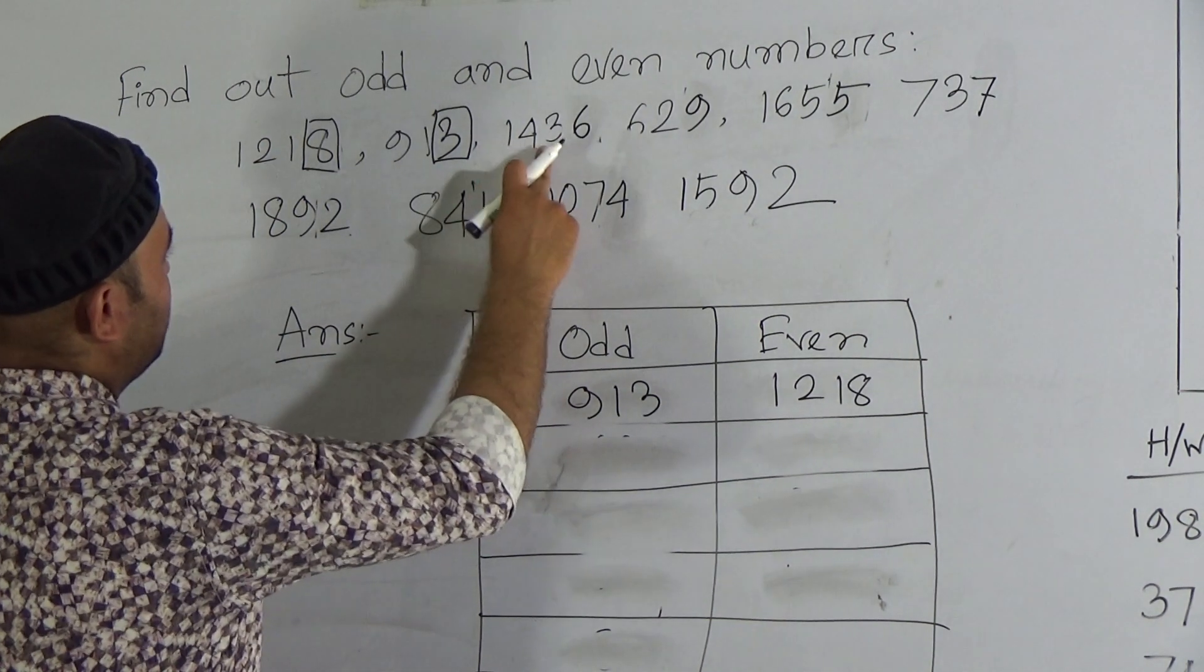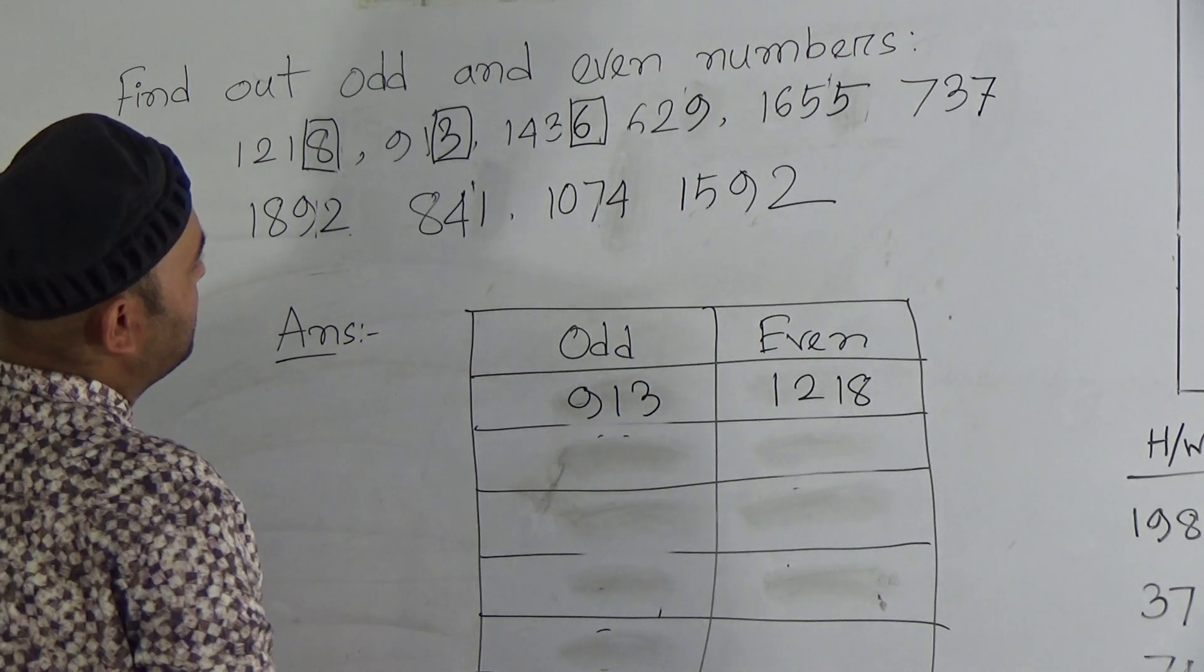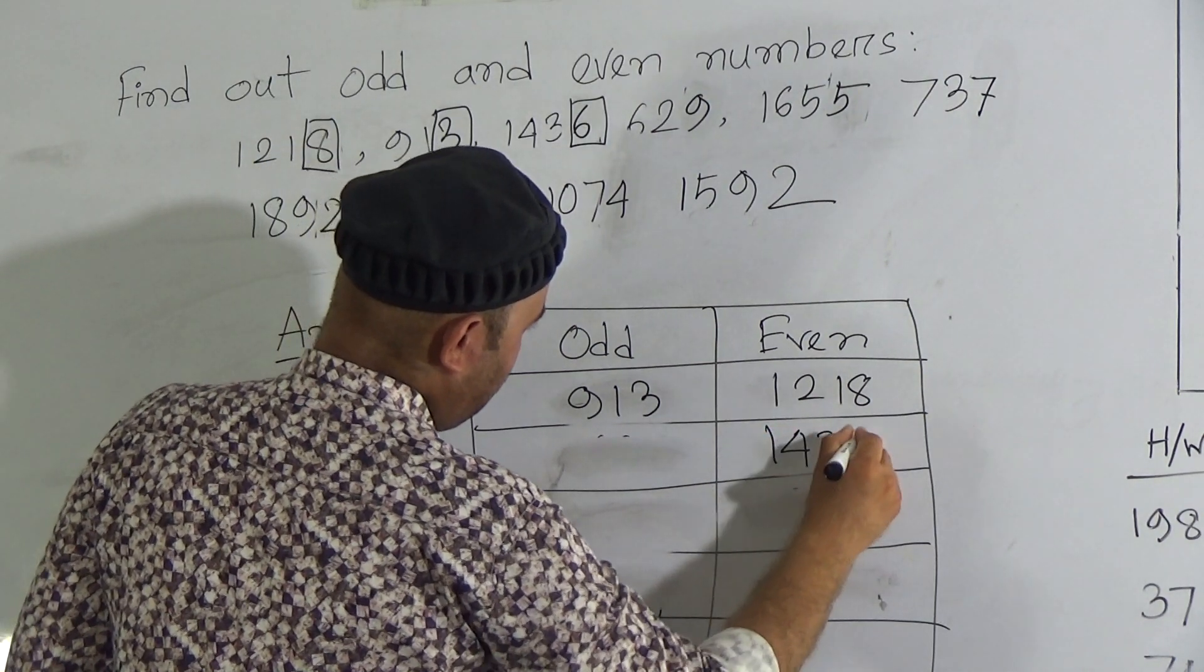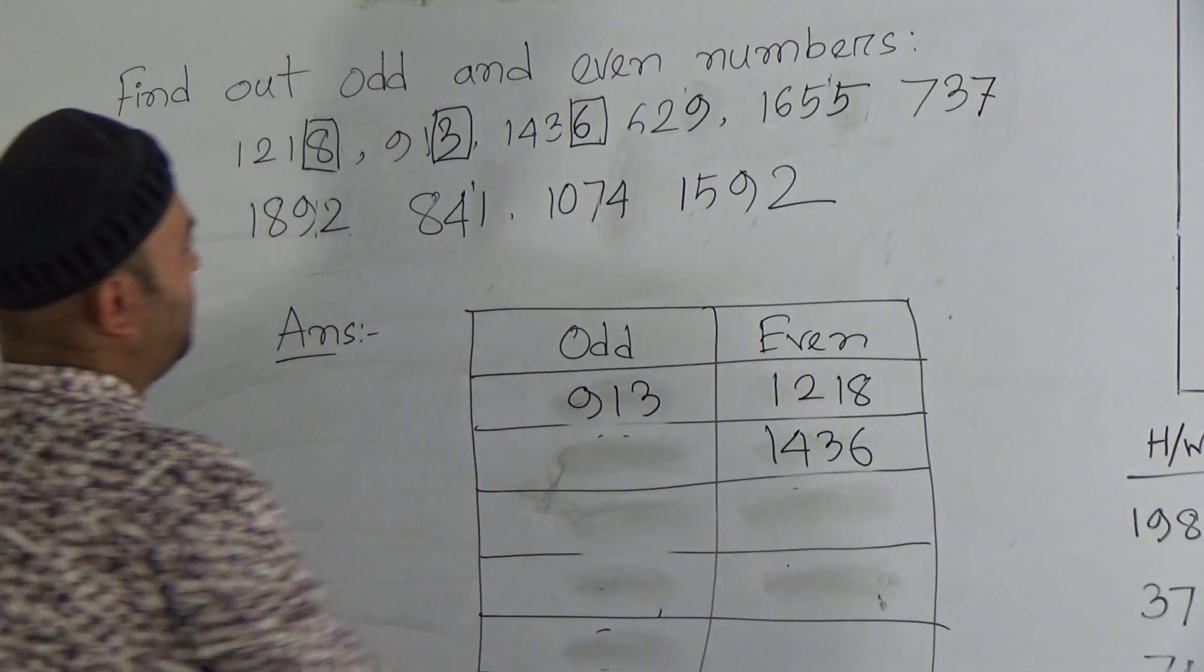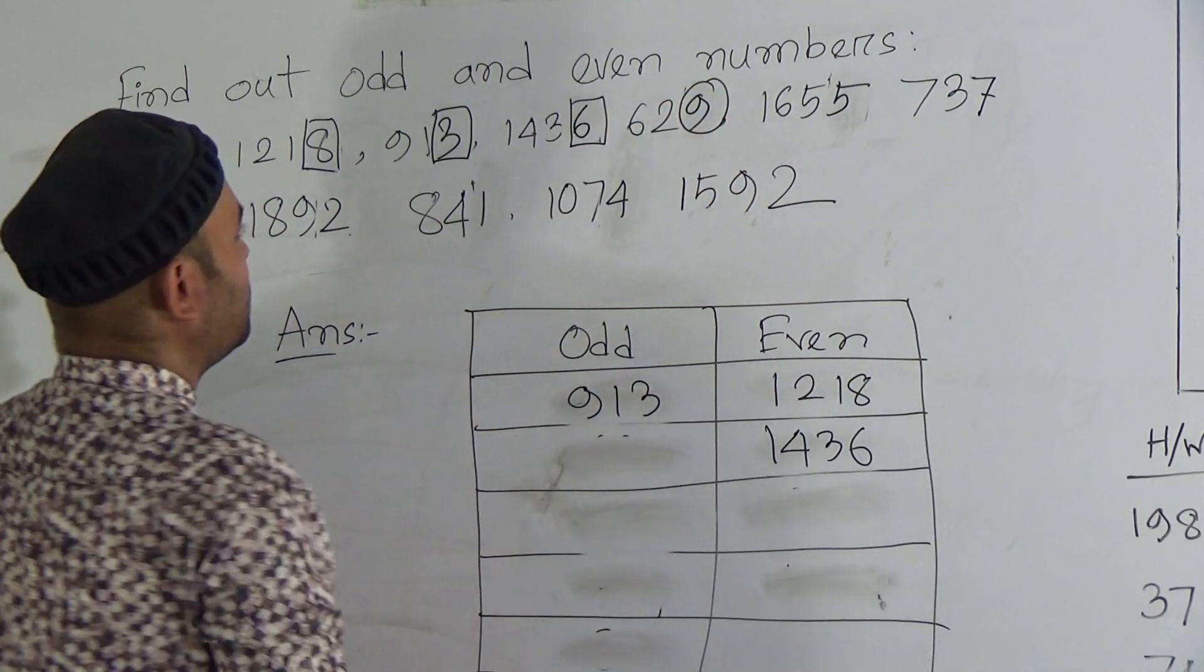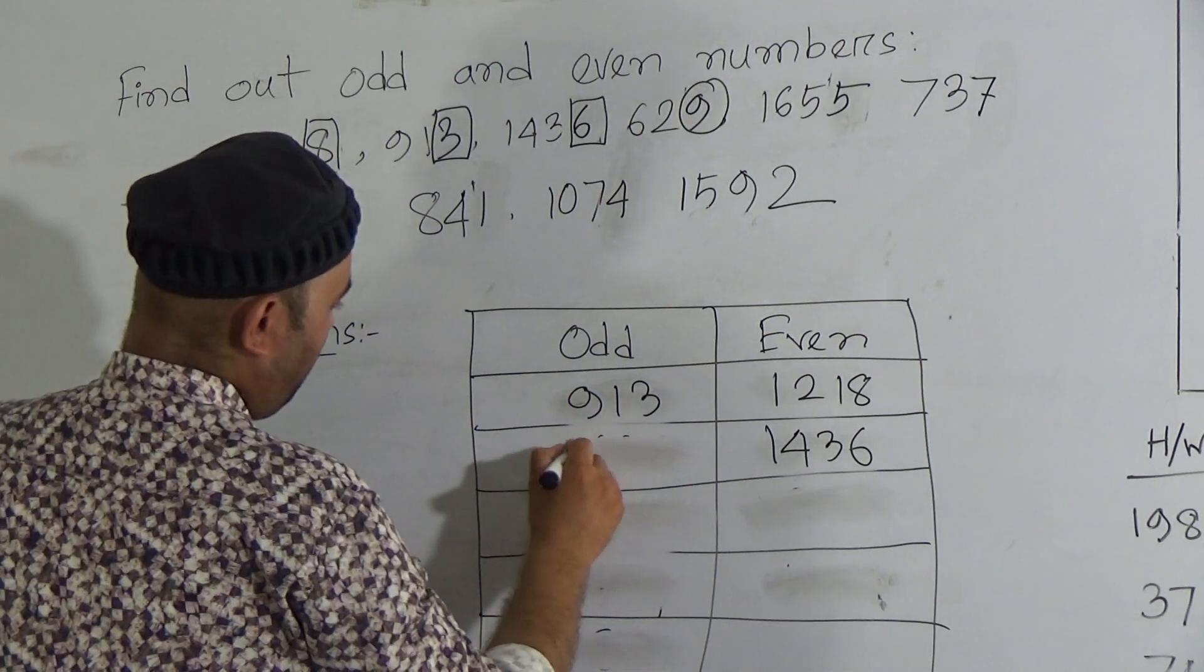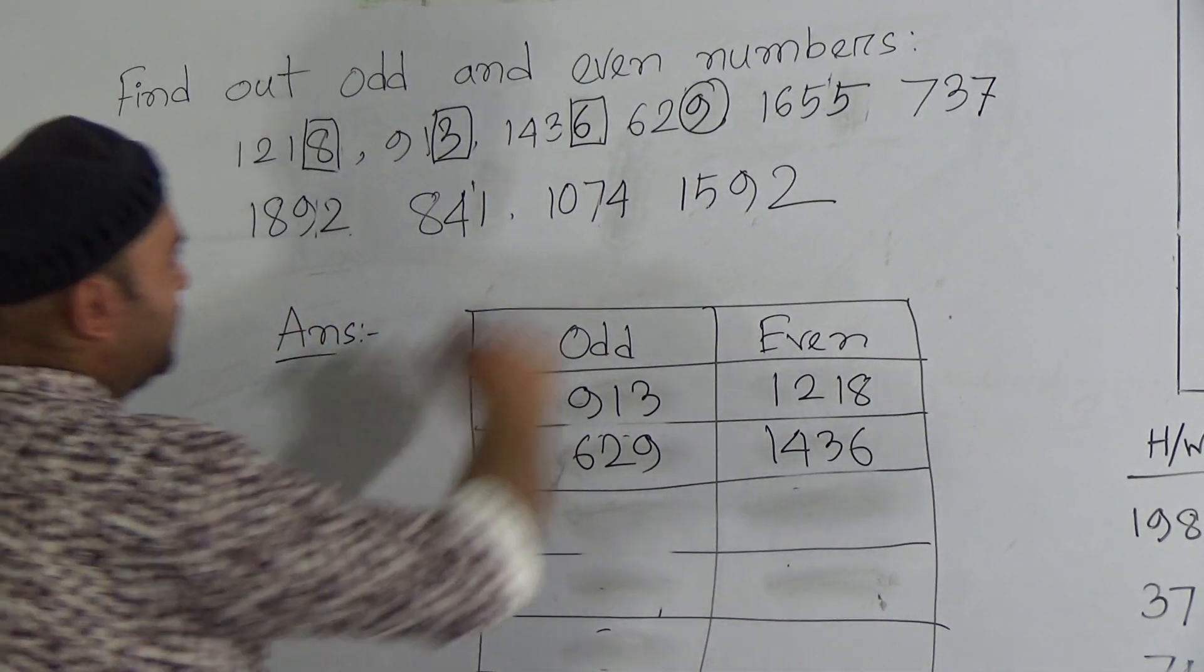Now, 1436. 6 is here, ones place digit. And we know that 6 is an even number. That's why 1436 is also an even number. Now, next one, 629. 9 is here, ones place digit. And we know that 9 is an odd number. That's why 629 is also an odd number.